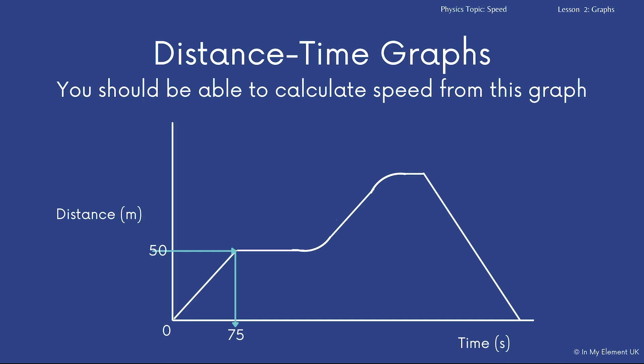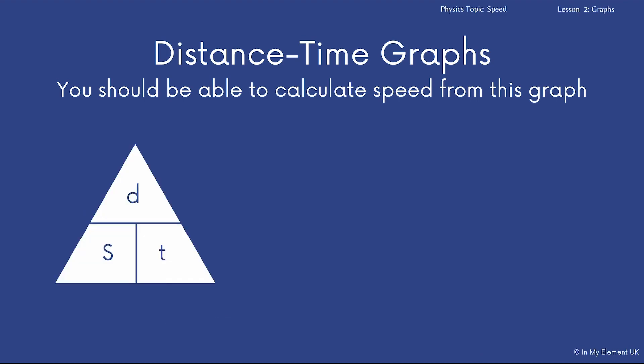So this shows you that the time, these two blue arrows have highlighted that the time on this graph is 75 seconds and the distance is 50 metres. Now, we talked about the equation before, speed equals distance over time.